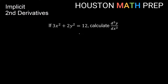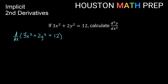Let's take a look at some examples here. If we have 3x squared plus 2y squared equal to 12 and we want to find the second derivative of y with respect to x, then we'll need to first differentiate and get our first derivative. So derivative with respect to x of 3x squared plus 2y squared equal to 12. The first term derivative is a power rule: 2 comes out front, multiplies the 3, power goes down by 1, and we get 6x.